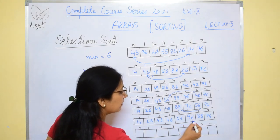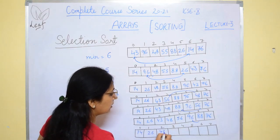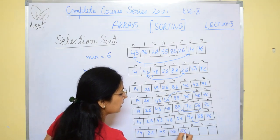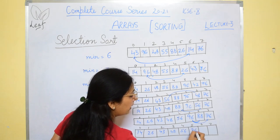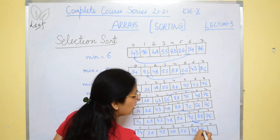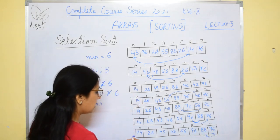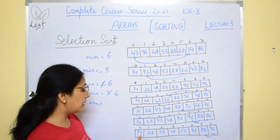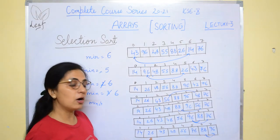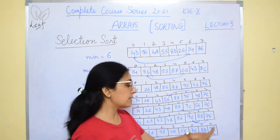Now we take these values: 5, 14, 26, 43, 48, 56, 96 — no change; 76 will be here. Then 88 and 96 — again no change.